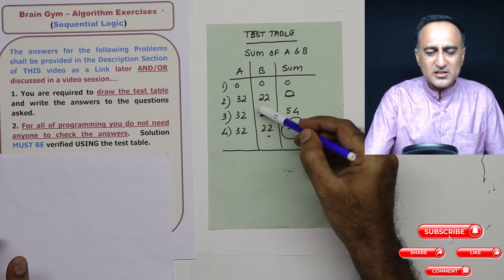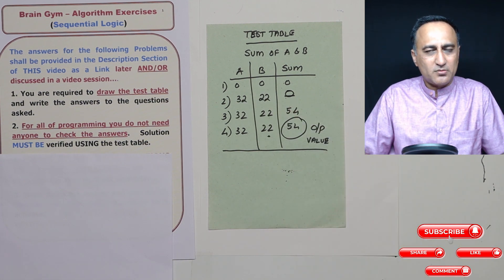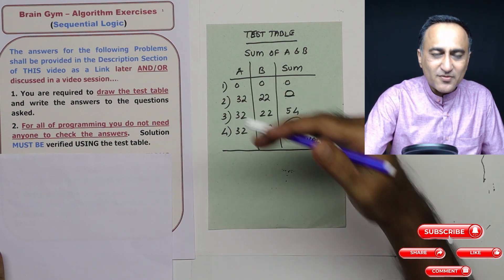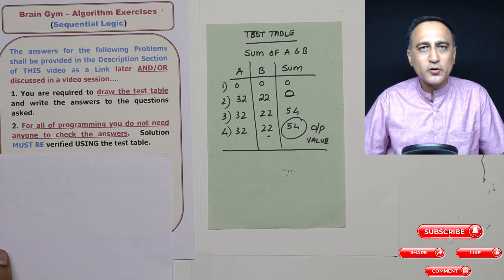You can 100% verify the solution using the test table. Because suppose if I had made some mistake, I would not have got the correct output. That's how I understand that something is wrong, then go back at different steps and see where you went wrong. That's a skill you need to develop.